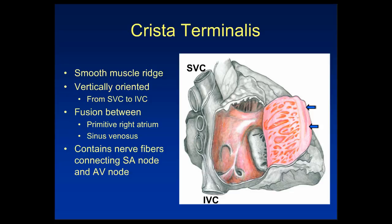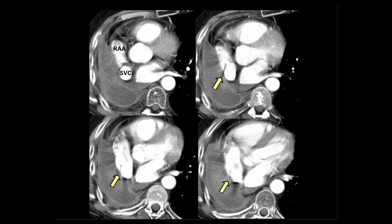The crista terminalis is a smooth muscle ridge which extends vertically from the SVC to the IVC, representing the fusion between the primitive right atrium and the sinus venosus portions of the right atrium. It contains nerve fibers connecting the sinoatrial node and the atrioventricular node. On sequential axial CT images, we see this linear opacity extending into the right atrium, and we don't want to misinterpret that as either a thrombus or a pedunculated lesion.